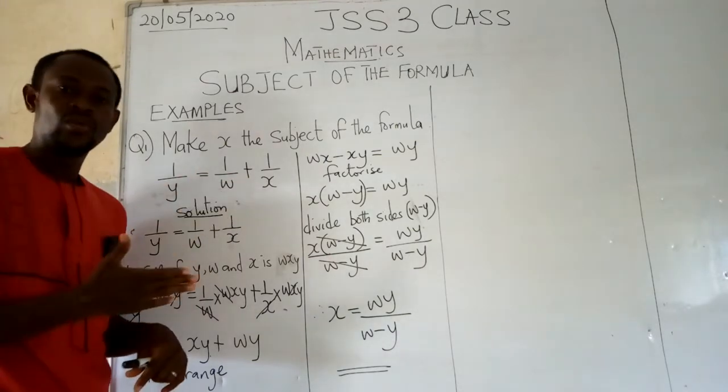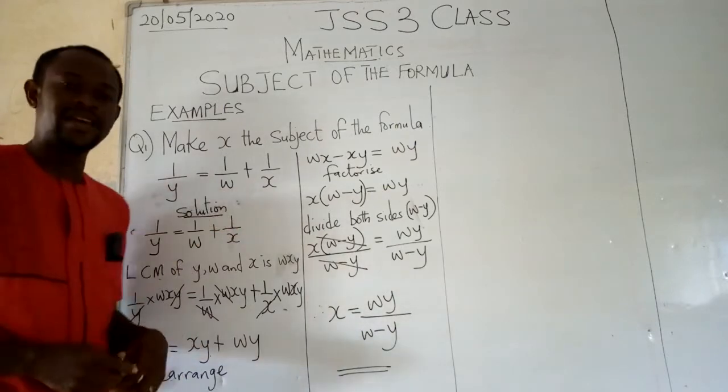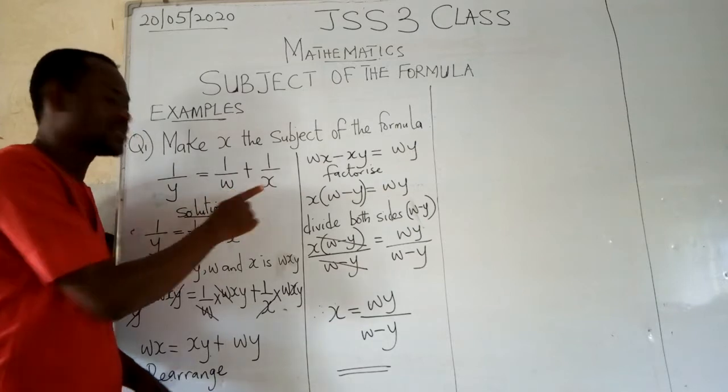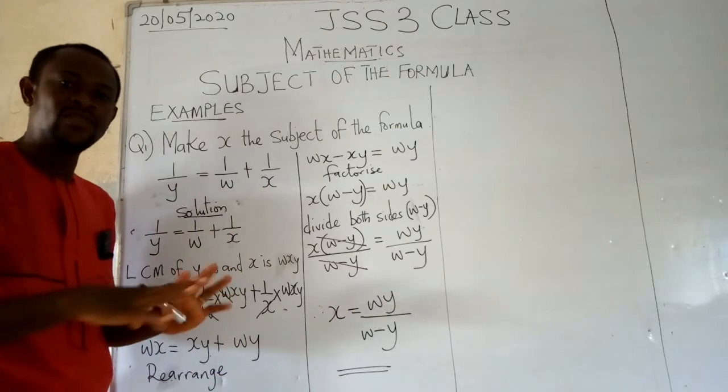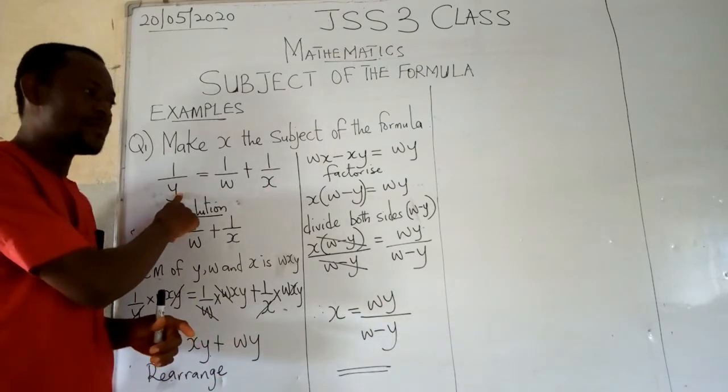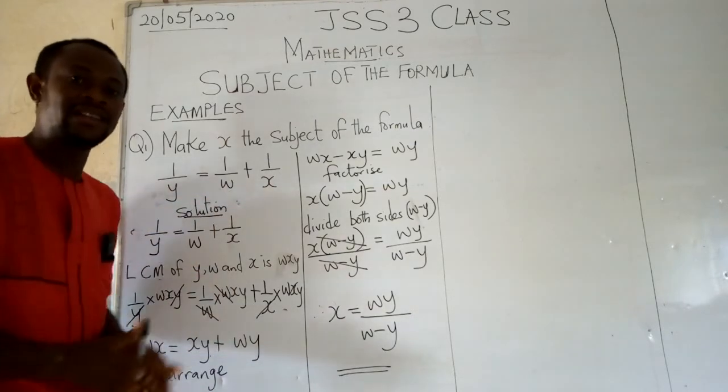For us to achieve this we can simply go by the LCM, LCM of y, w and x. If you look at y, w and x, they have nothing in common. So when we are talking of LCM, y, w and x make up the LCM.